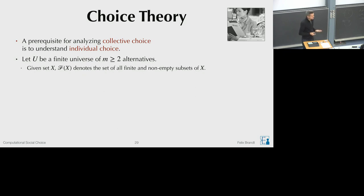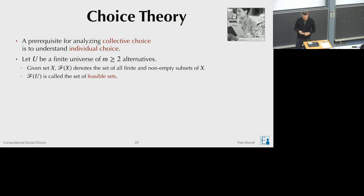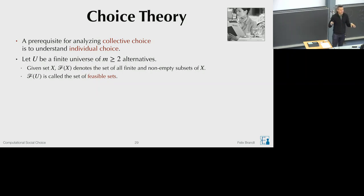We need some notation. The calligraphic F of a set X denotes the set of all finite and non-empty subsets — basically the power set excluding the empty set. We apply this to the universe: F(U) is the set of all non-empty subsets of U, called feasible sets. The idea of choice theory is that we make choices from different feasible sets, and we define conditions saying these choices are consistent with each other.